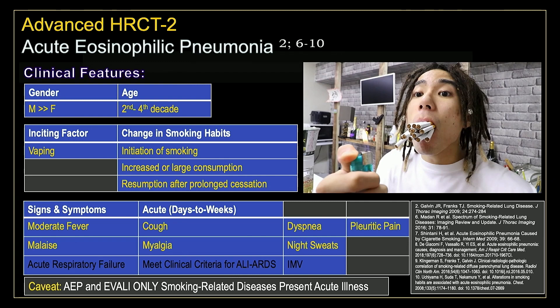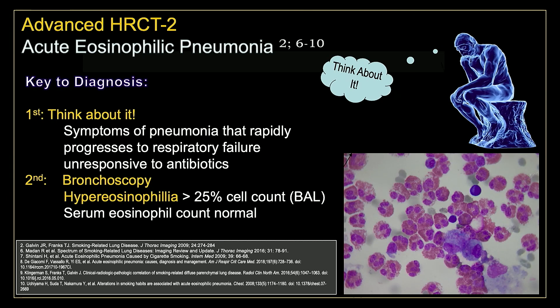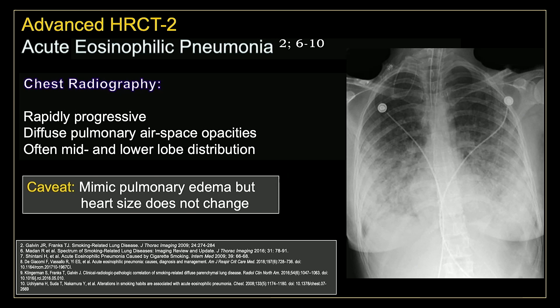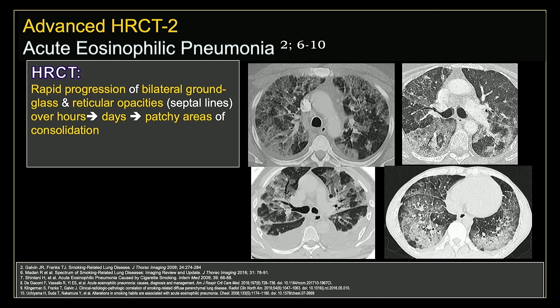Acute eosinophilic pneumonia and EVALI are the only smoke-related lung diseases to present as an acute illness. The key to making this diagnosis is, first of all, think about it — in patients who have symptoms of pneumonia that rapidly progress to respiratory failure but are unresponsive to antibiotics, especially in our younger patient population. The next step is bronchoscopy with lavage, looking for an elevated eosinophil count greater than 25%, which confirms the diagnosis. On chest radiography, we'll see rapidly progressive diffuse airspace opacities, often in the mid and lower lung zone distribution. This looks a lot like diffuse alveolar hemorrhage, community-acquired pneumonia, or pulmonary edema. One way we can differentiate this from pulmonary edema is the heart size does not change in this scenario.